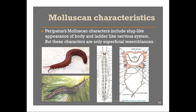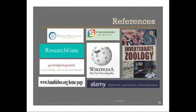To summarize, this topic of Onychophora has been covered in three parts: the first part discussed the general features, the second part covered the example Peripatus, and the third part discussed the affinities of Peripatus or Onychophora with Annelida, Arthropoda, and Mollusca. That is the end of this section — thank you.